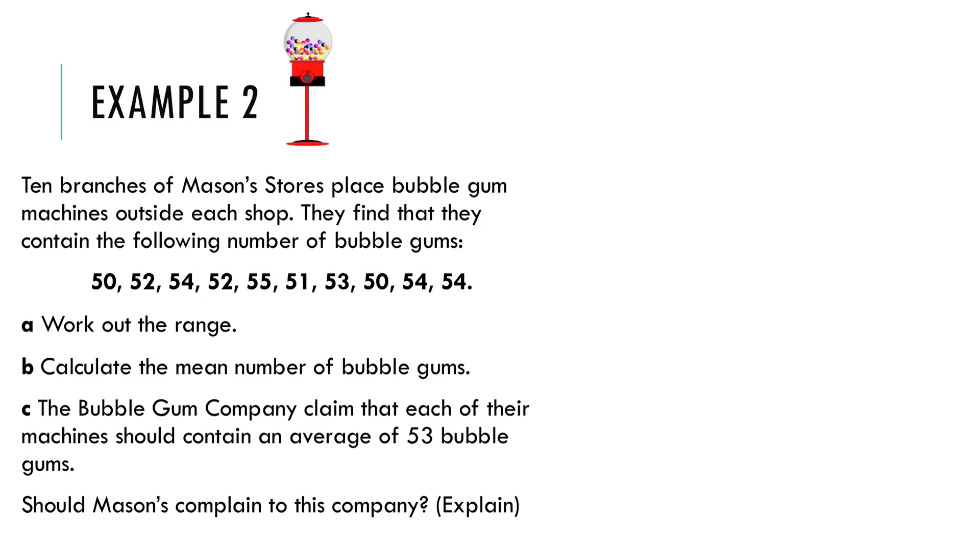Example two. Ten branches of Mason's Stores place bubble gum machines outside each shop. They find that they contain the following number of bubble gums. Work out the range. So remember I said we do need to have the numbers in order to work out the range, so I'm going to start by ordering these numbers. I'm going to score them out as I go along. So I've got two 50s here. Then I've got a 51. 52 and 52. 53. Three 54s. And a 55.